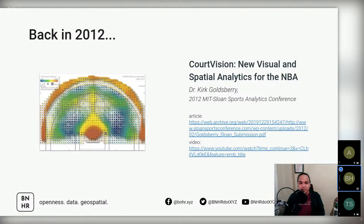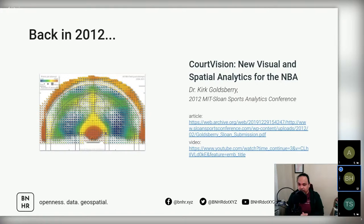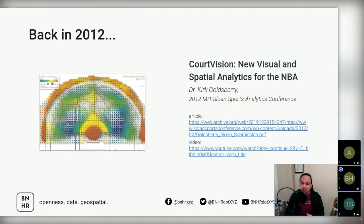That brings me to a brief history of how I came to this point. Way back in 2012, I saw a study by Dr. Kirk Goldsberry entitled 'Court Vision,' where he presented visual and spatial analytics for the NBA. He wanted to answer the age-old question of who the best shooter in the NBA was. The current statistics — field goal percentage, effective field goal percentage, points per attempt — weren't incorporating the spatial aspect of shooting, meaning they didn't show where shots were being made or taken. This resonated a lot with me and opened up many ideas.